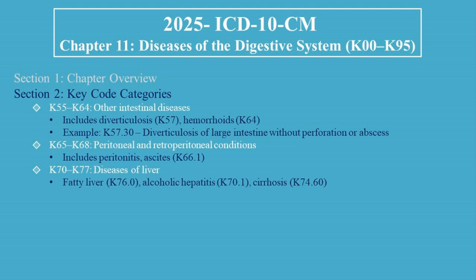K70 to K77 covers diseases of the liver, including fatty liver (K76.0), alcoholic hepatitis (K70.1), and cirrhosis (K74.60).